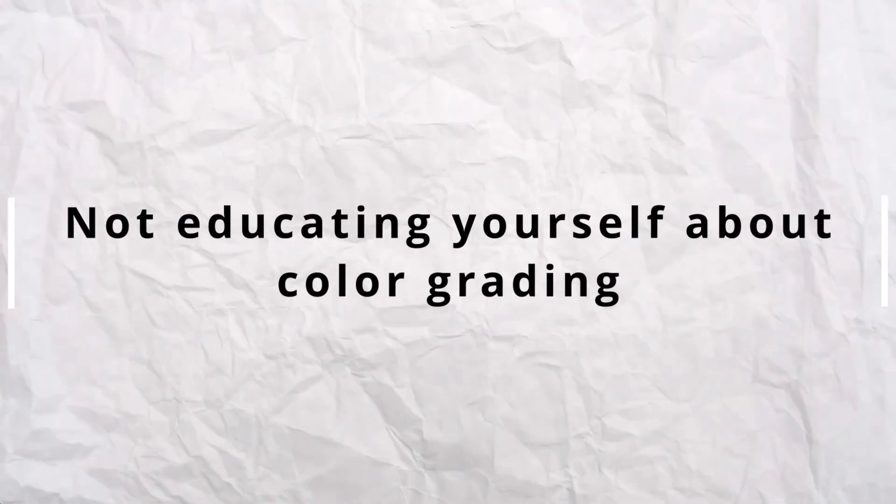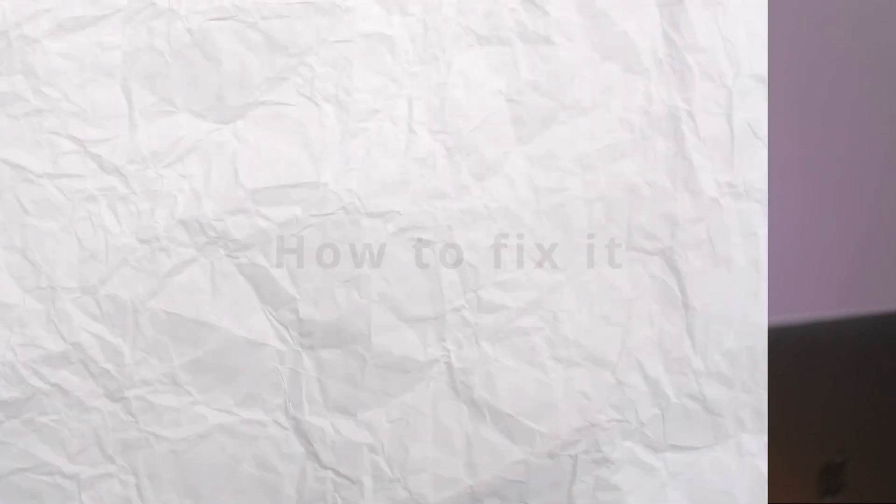Mistake number five is not educating yourself about color grading. A lot of photographers don't have the basic understanding of how color grading or color theory actually works. Taking your time to learn and understand the basics of color theory can help you color grade your images much better. Color grading is an art — there's no right or wrong way to do it; it all depends on the look you're going for. Color grading is just one aspect of a good image, and retouching is another. If you're struggling with retouching and want to learn, check out this video. I'll see you guys in the next one — stay tuned.